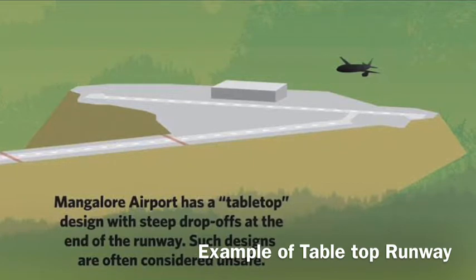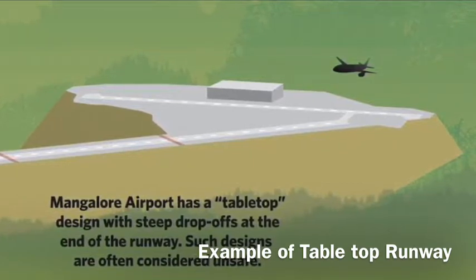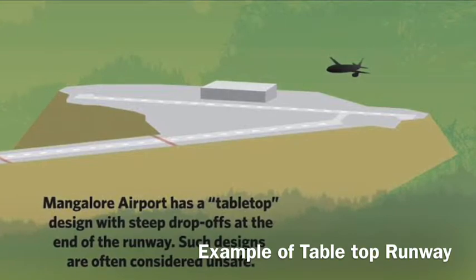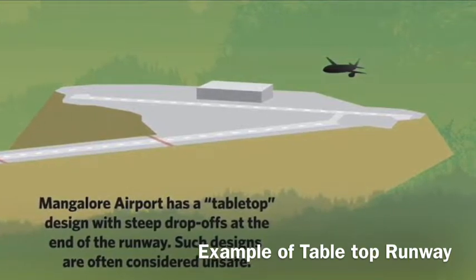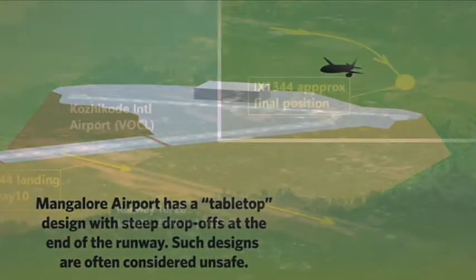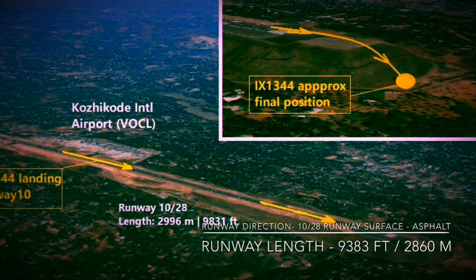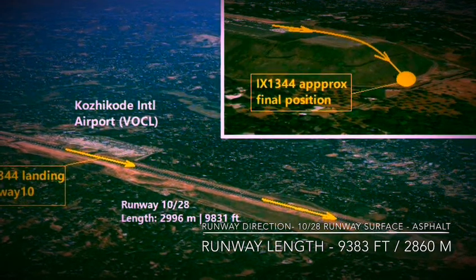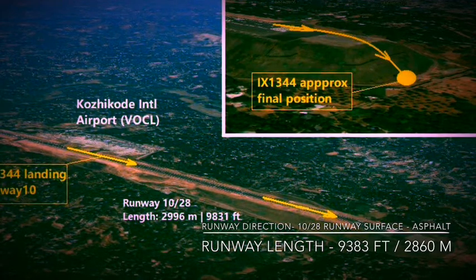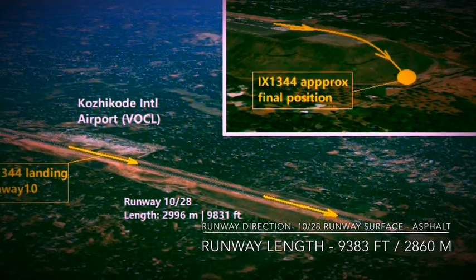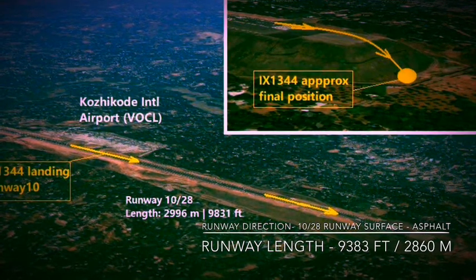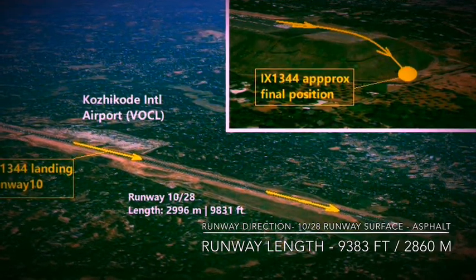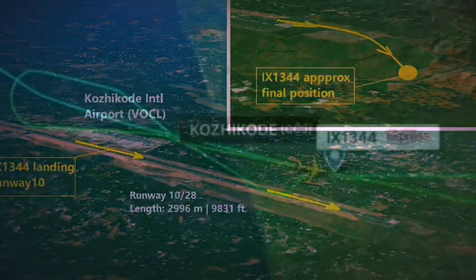A tabletop runway is a runway located at the top of a plateau or hills, with one or both ends adjacent to a slope. Here you can see a clear picture of a tabletop runway. The length of Kozhikode runway is 2,860 meters. The yellow marking indicates the landing zone of Runway 10, which is where this Air India flight had to land.